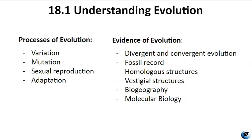Natural selection relies on genetic variation within a population, which primarily arises from mutation and sexual reproduction. Mutations introduce new alleles whose effects on fitness can range from harmful to beneficial or neutral. Sexual reproduction contributes to genetic diversity by producing unique combinations of alleles in offspring. An adaptation is a heritable trait that enhances an organism's survival and reproduction in its current environment. Examples include a platypus's webbed feet for swimming, a snow leopard's thick fur for cold environments, and a cheetah's speed for catching prey. The favorability of traits depends on prevailing environmental conditions.